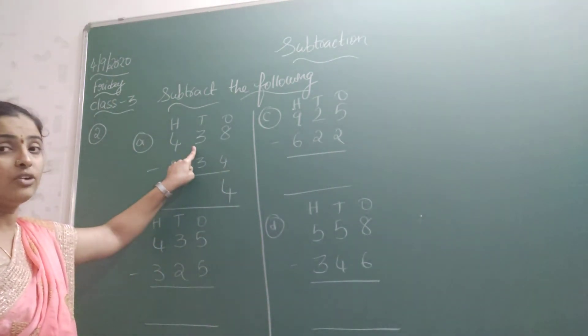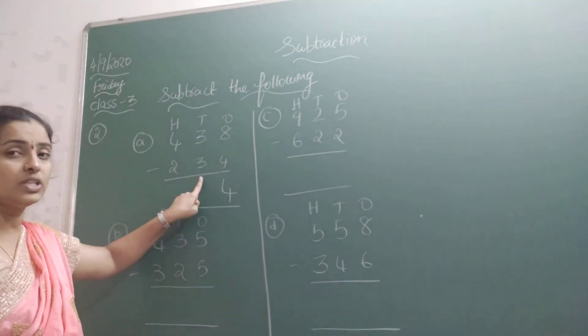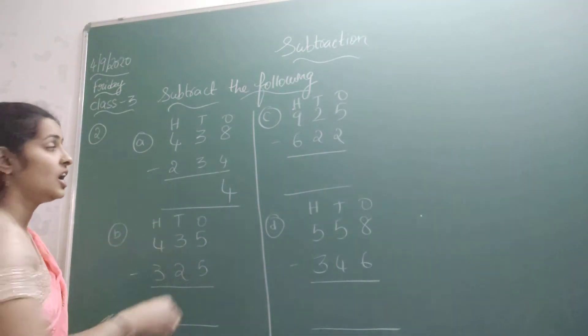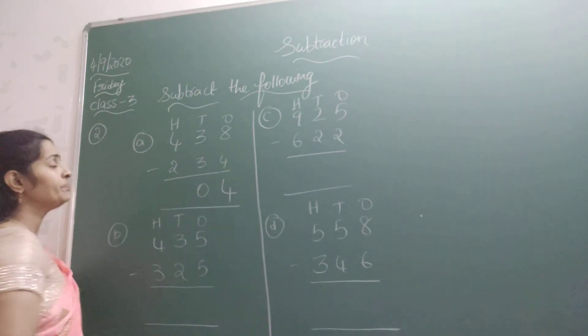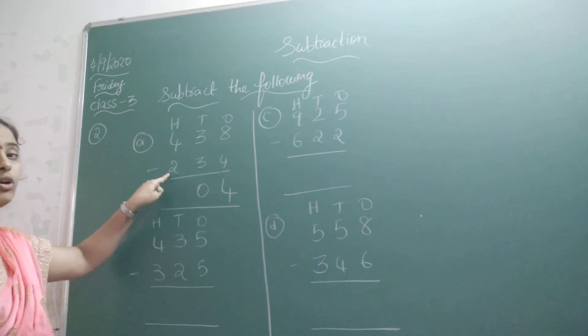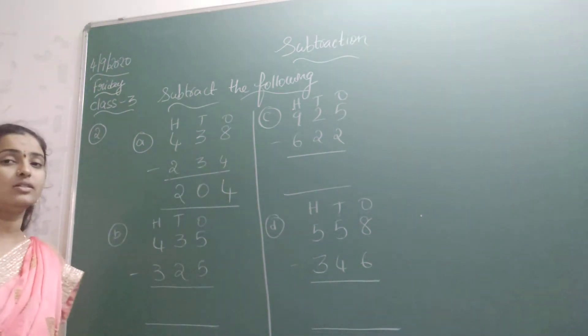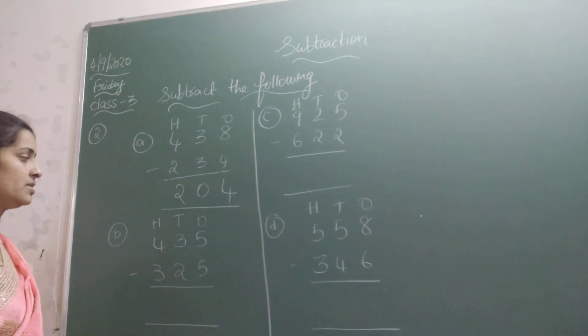Next in ten's place, 3 minus 3. From 3 I need to remove 3. So what will I get here? I will get the value 0. Then 4 minus 2. 4 minus 2 is how much? 2. So what is the required answer? 204 is the required answer.